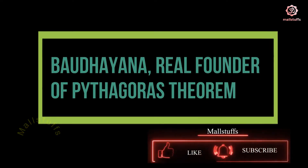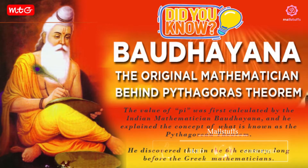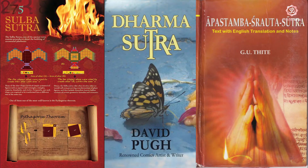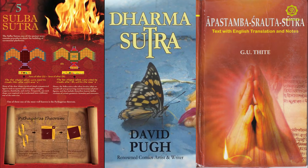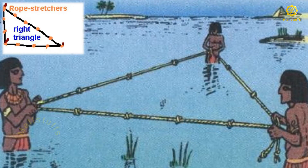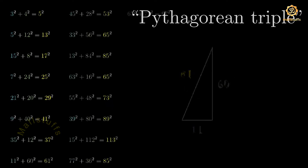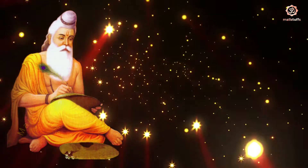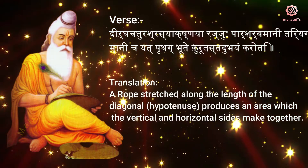Bodhayana — the real founder of Pythagoras theorem. Bodhayana was an Indian mathematician and sage, the author of Sulvashutra, Dharmashutra, and Srotashutra. Bodhayana not only proved Pythagoras theorem, but also gave the series of algebraic triplets, commonly known as Pythagoras triplets. The relevant Sanskrit verse from Sulvashutra written by Bodhayana establishes this clearly.